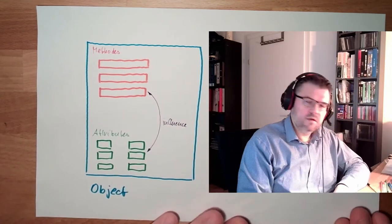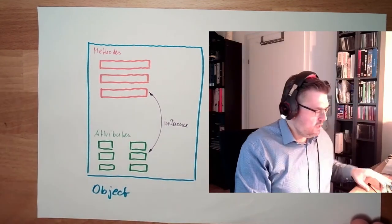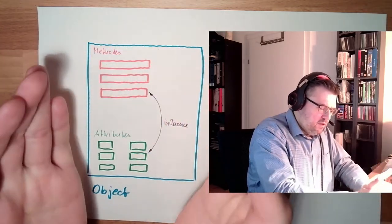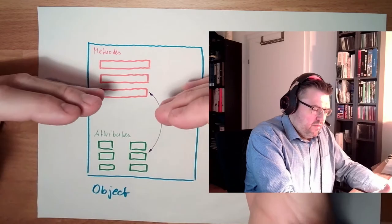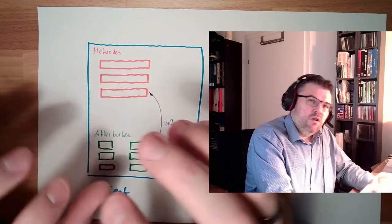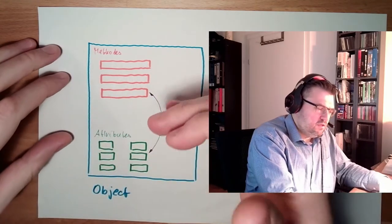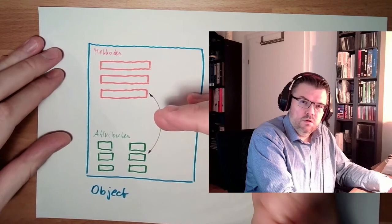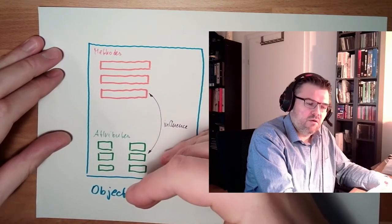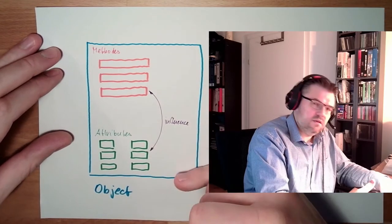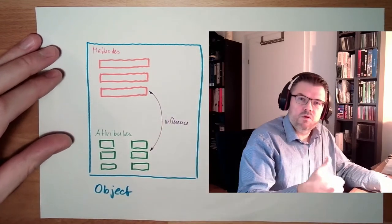This would be methods. The thing is that we capsuled now, within the so-called object, methods and attributes which belong to this object. So the methods describe what I can do with this object. And the attributes describe how the object is currently looking, the current state. And these describe the possible changes.